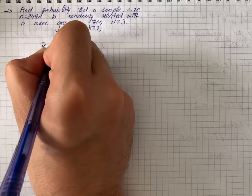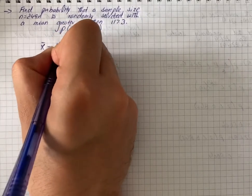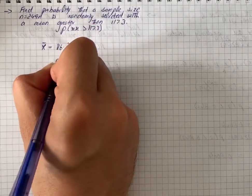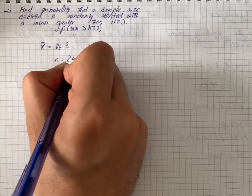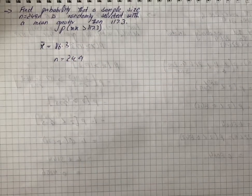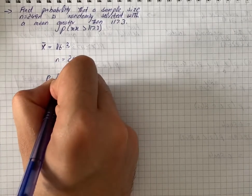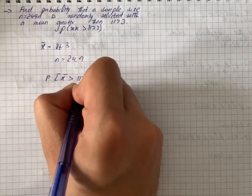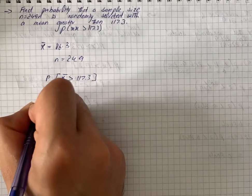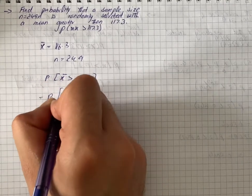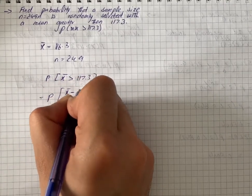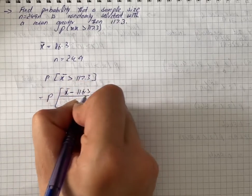x̄ is equal to 116.3, standard deviation σ equals 27.5, and n equals 249. The probability of mean greater than 117.3 is P(x̄ > 117.3). In formula, we have (x̄ - 116.3) divided by (27.5 divided by √249) greater than (117.3 - 116.3) divided by (27.5 divided by √249).